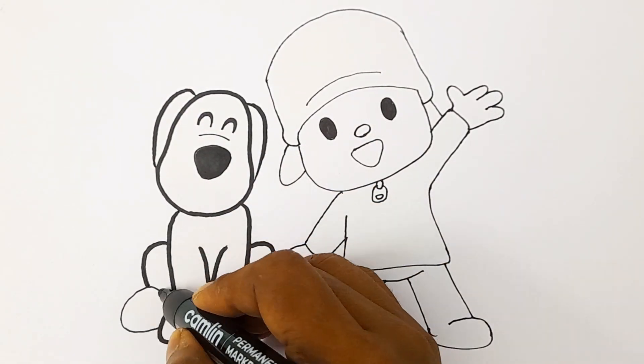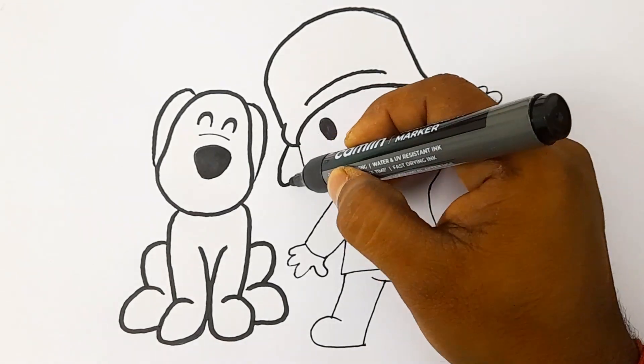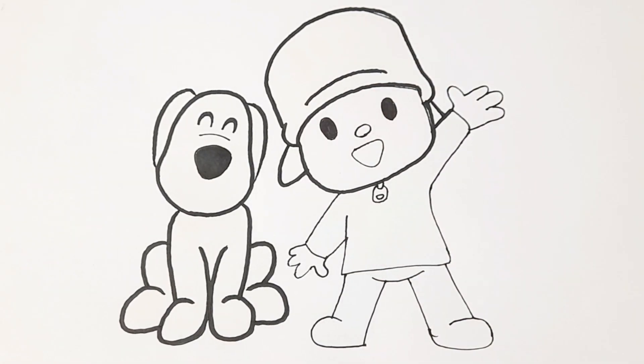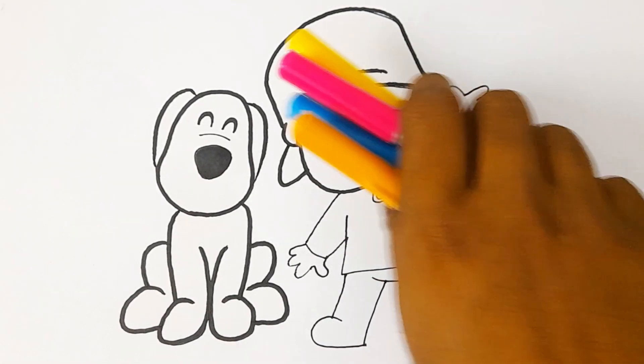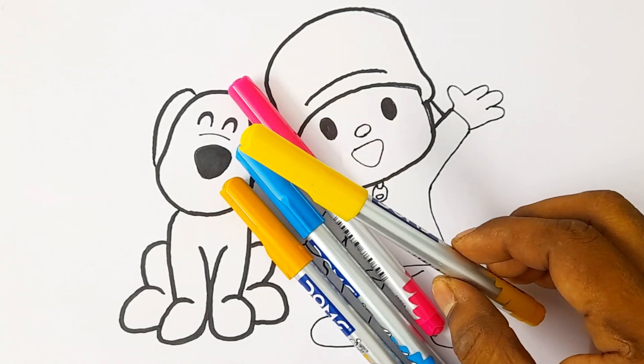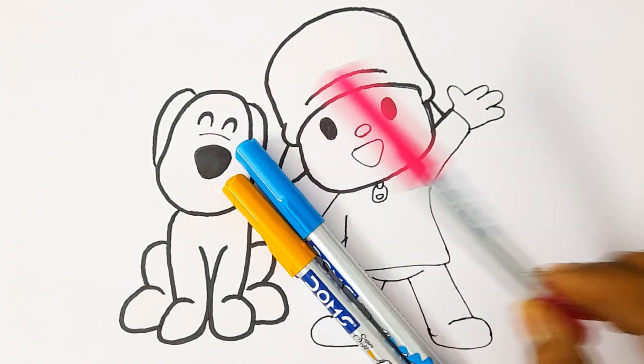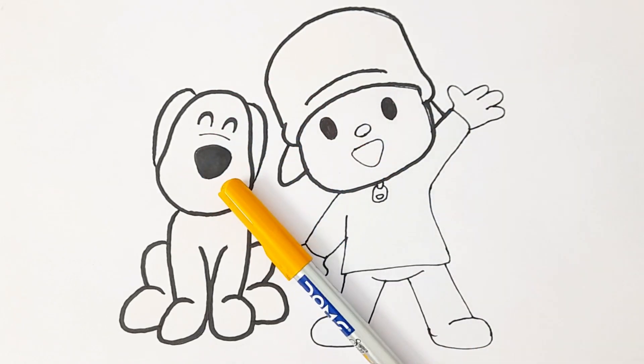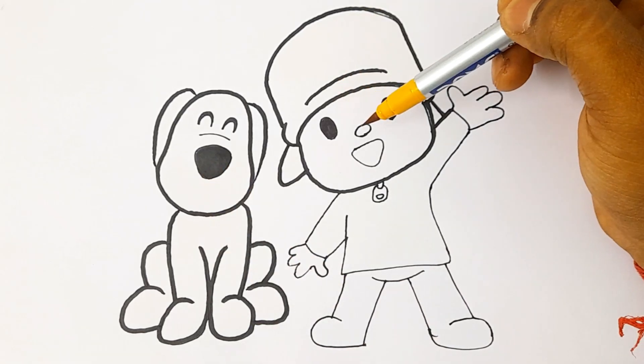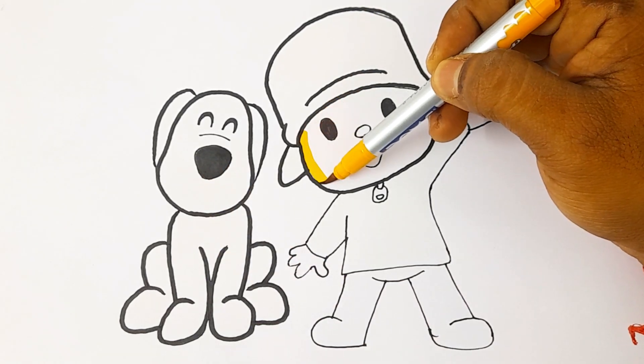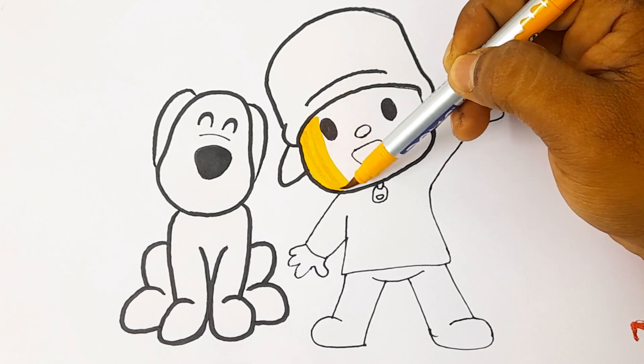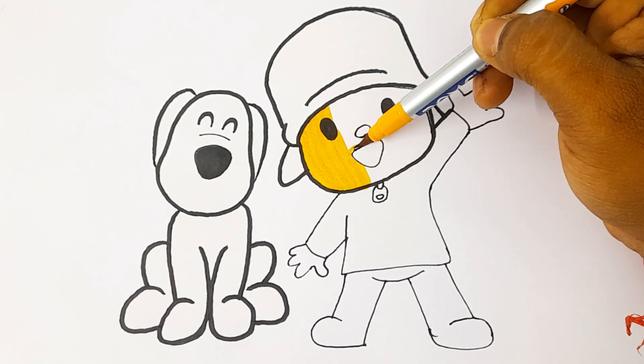Now we will use the marker for coloring. Let's learn the colors name: yellow color, dark pink color, sky blue color, dark yellow color. Let's color the Pocoyo, Lola Pocoyo, and the Pocoyo. Yay, like that!